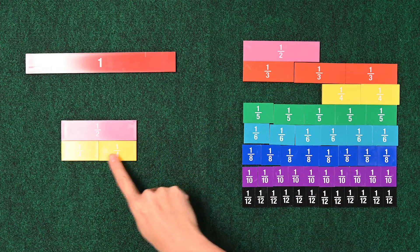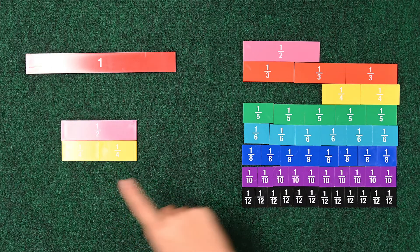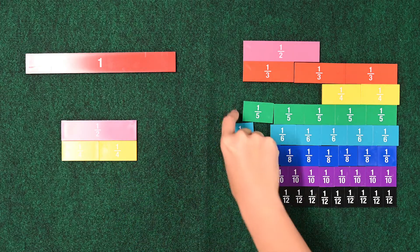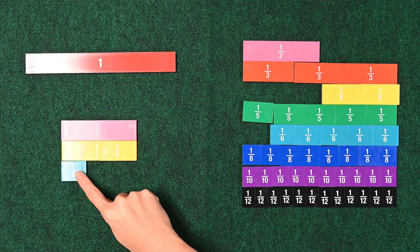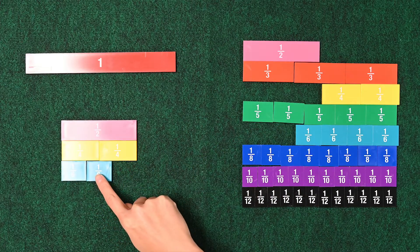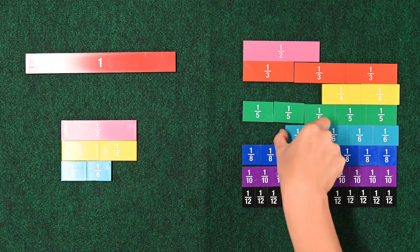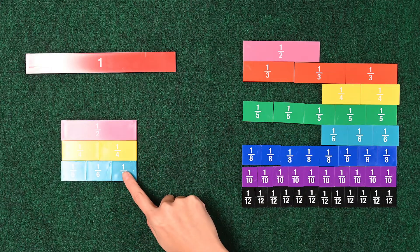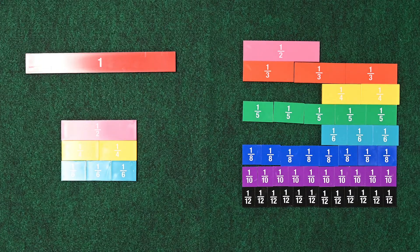Let's try it with the 6ths. Let's take 1 6th. 2 6ths. And 3 6ths. 3 6ths makes 1 half. Awesome.